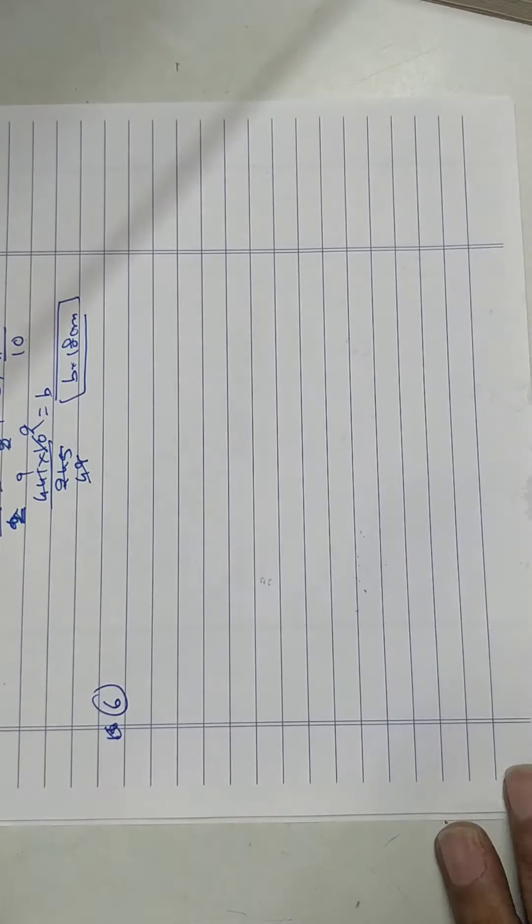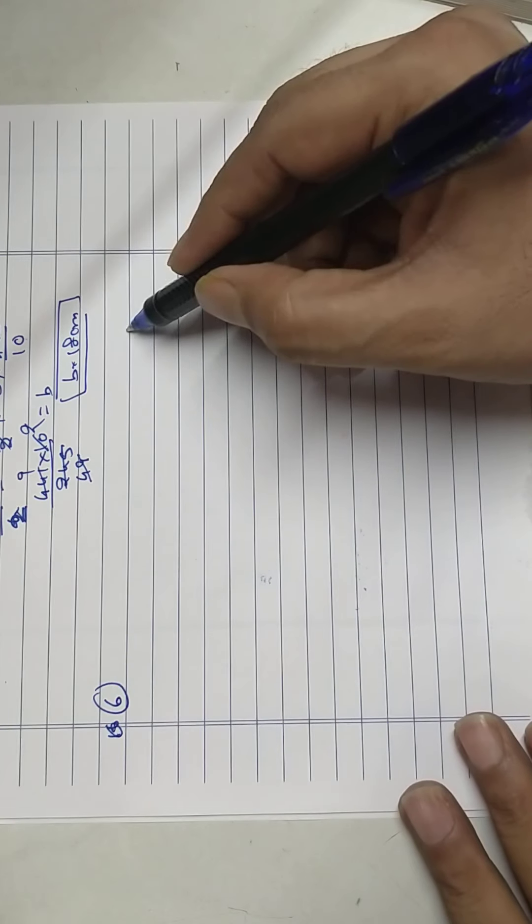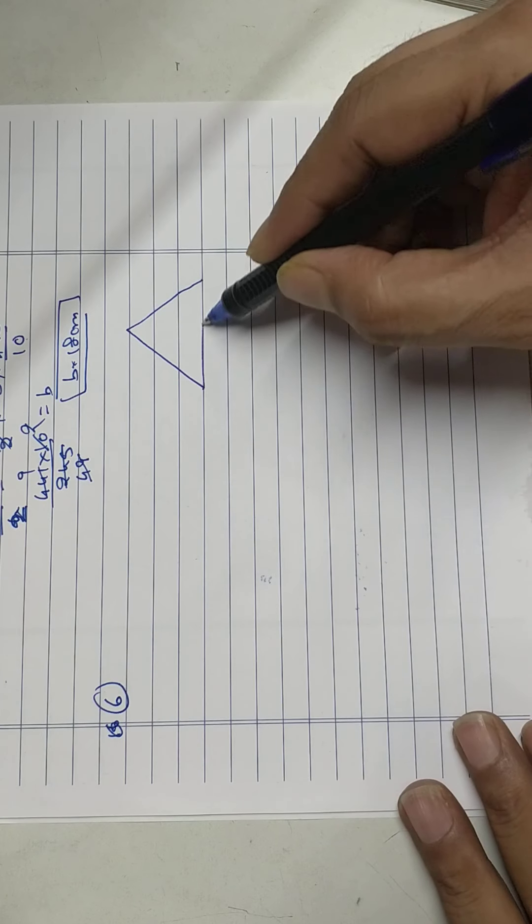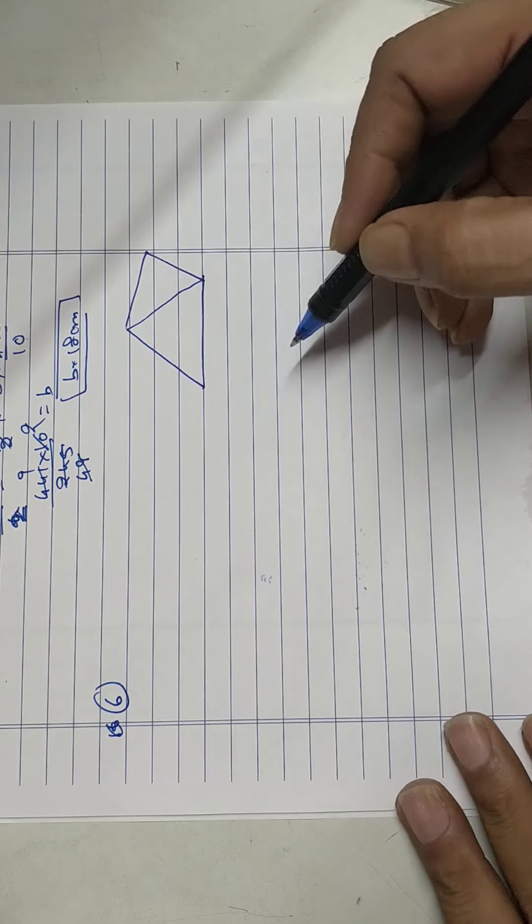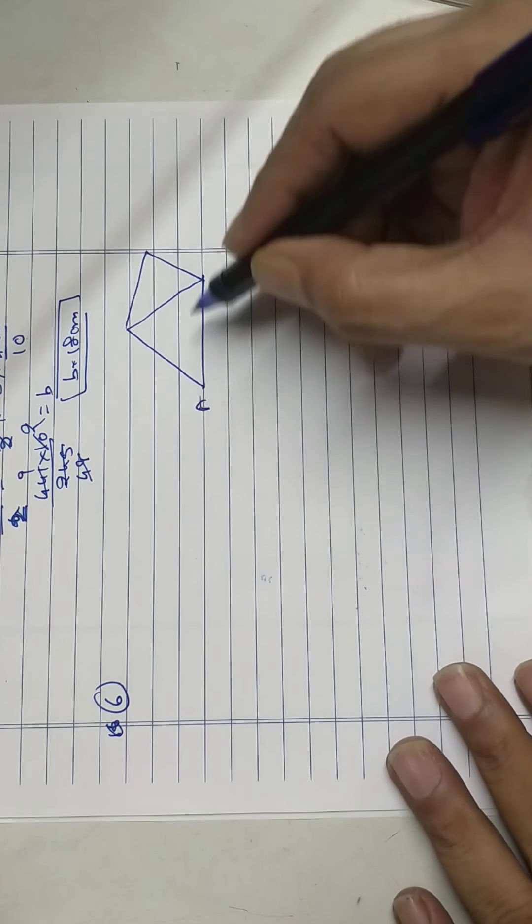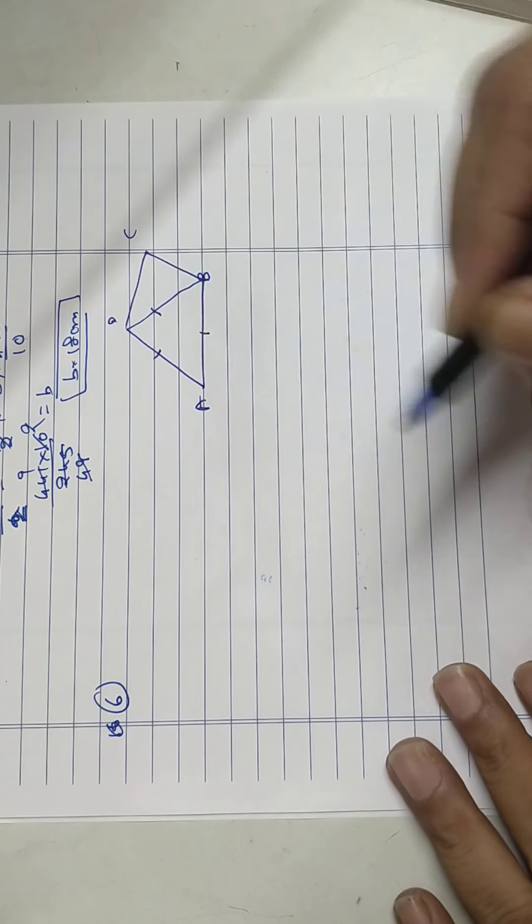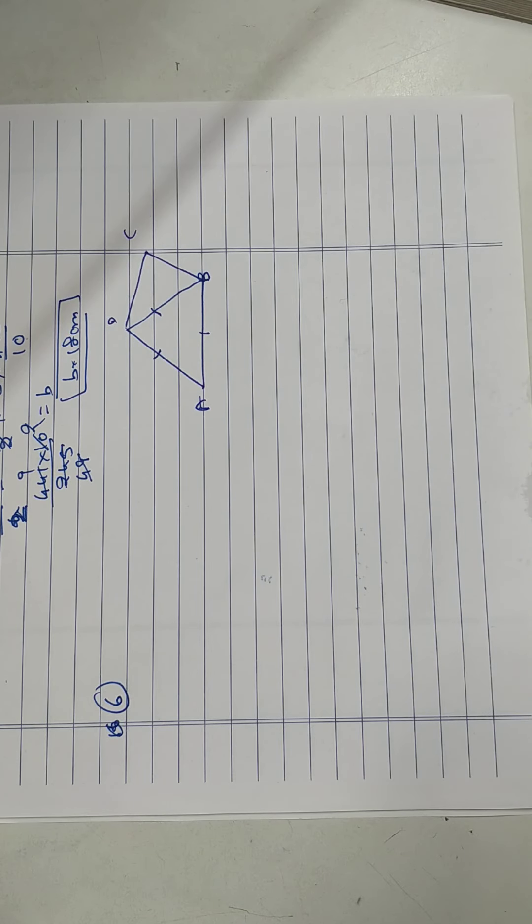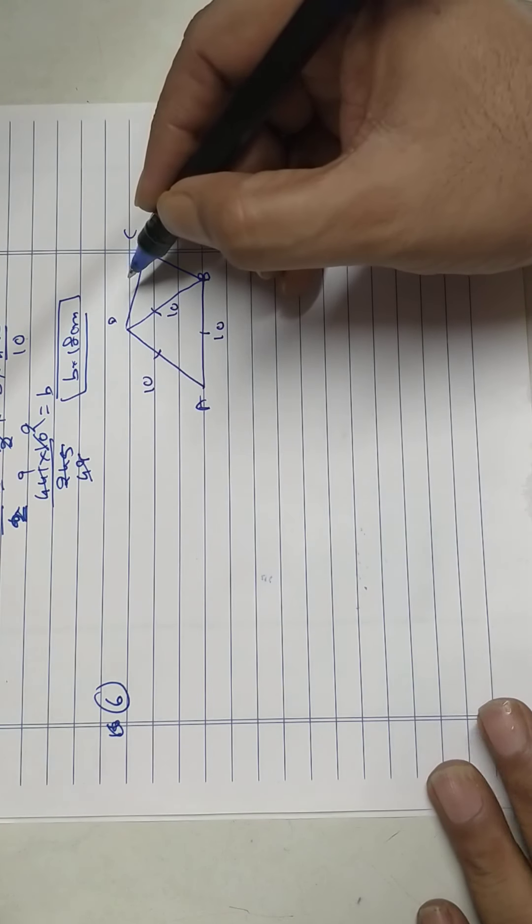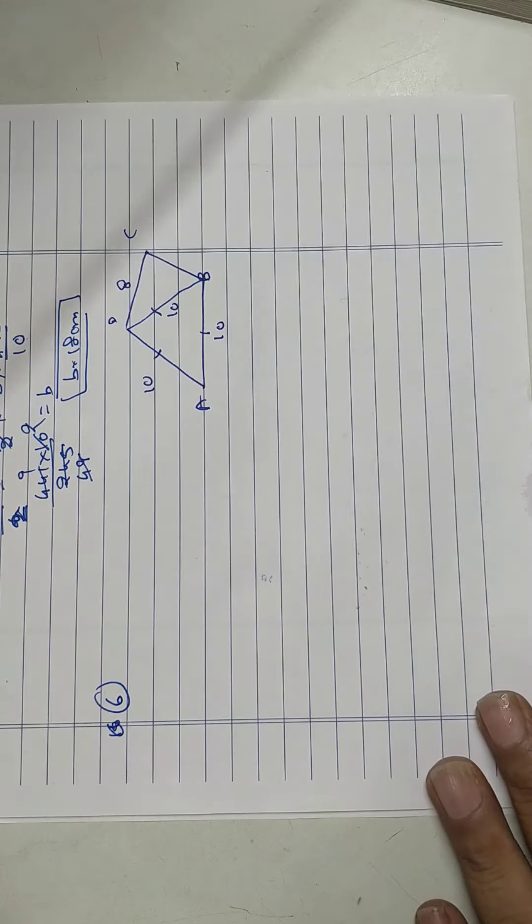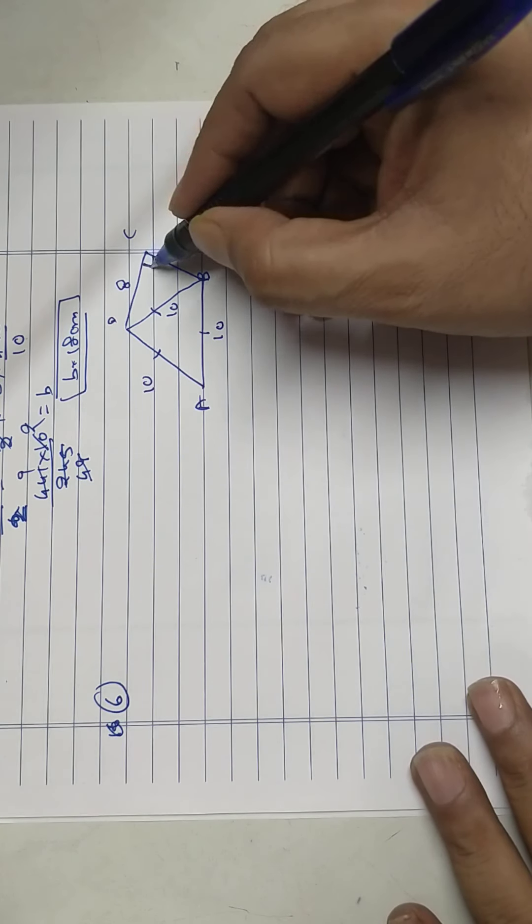Sum number 6. See, two triangles are combined. ABCD. This is an equilateral triangle, 10, 10, 10. This is 8, and this angle is 90.